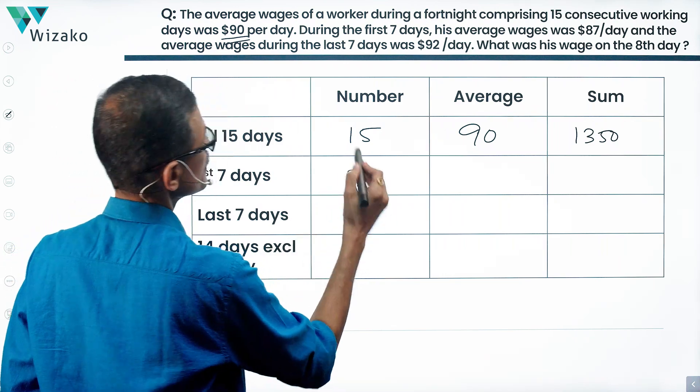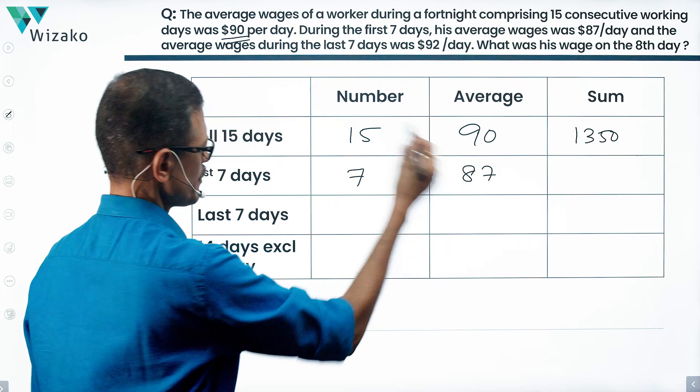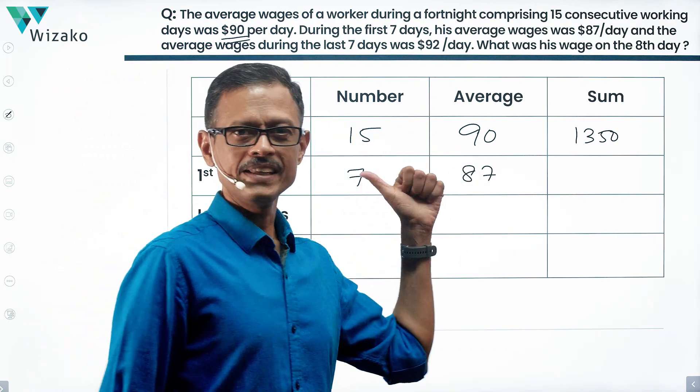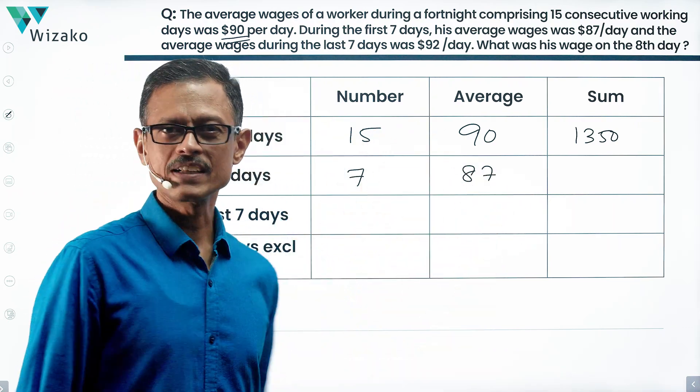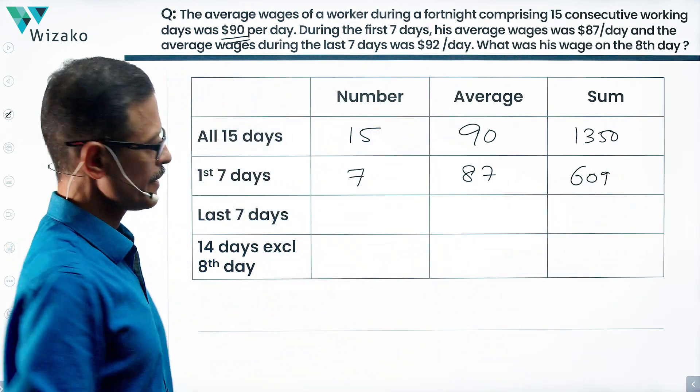First seven days, seven days. What is the average? Average is equal to 87. 7 into 87, 7 into 80 is 560 plus 49. 560 plus 49 is 609. This is the sum of the wages for the first seven days.